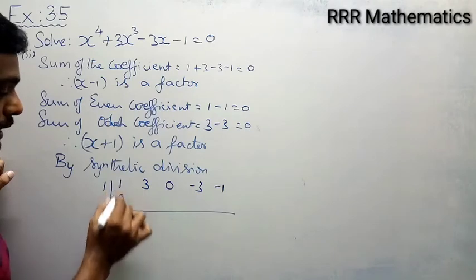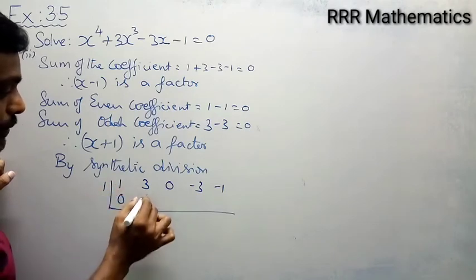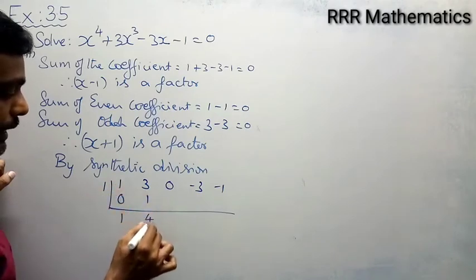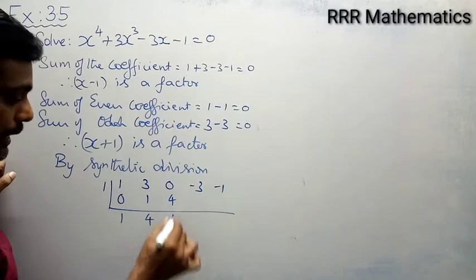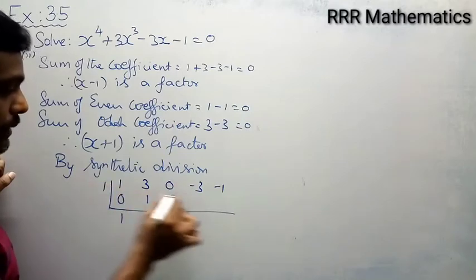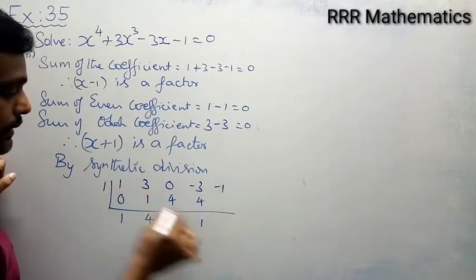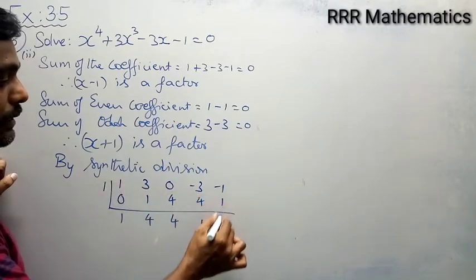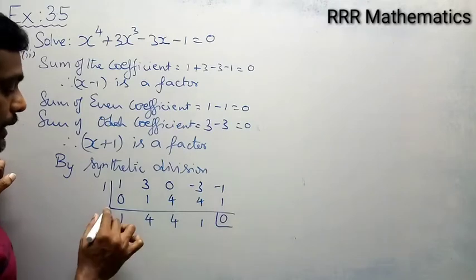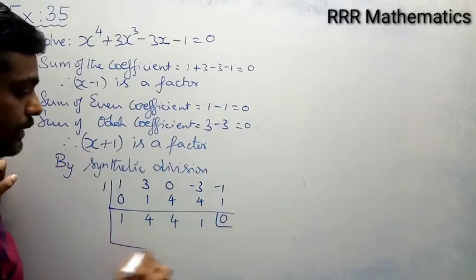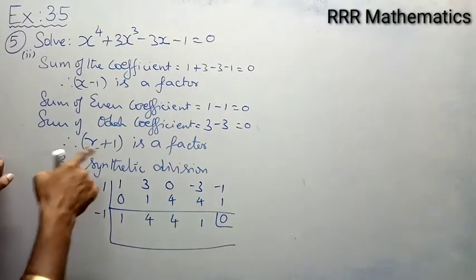Putting 1: bring down, add, multiply, add, multiply, add, multiply, add, multiply — the result is 0. So we can continue the synthetic division with -1 as well.